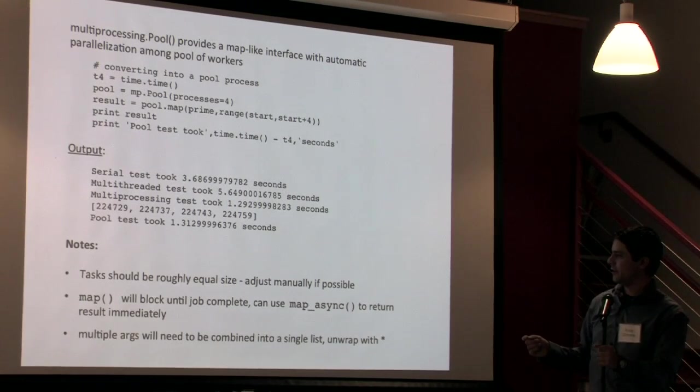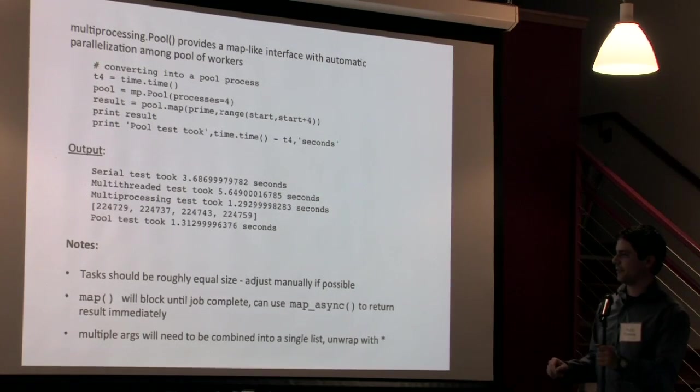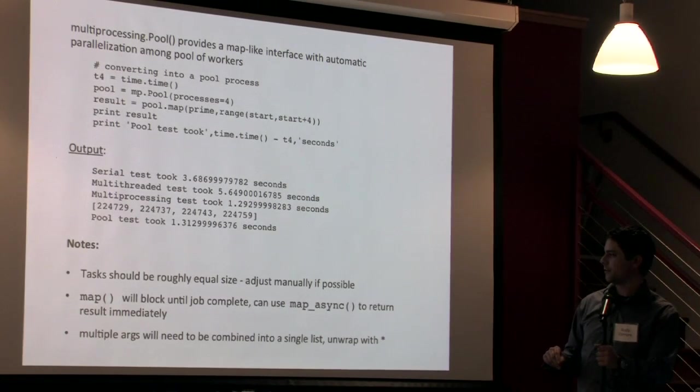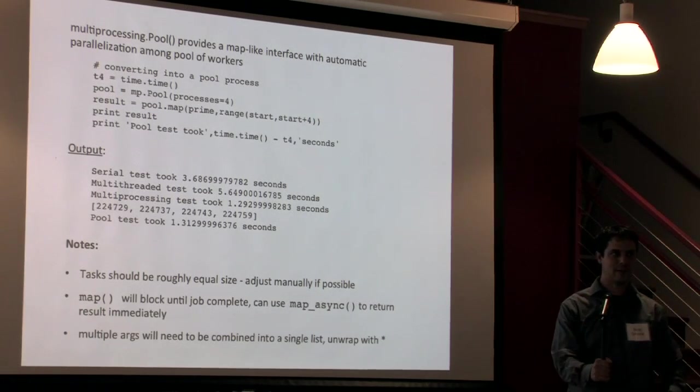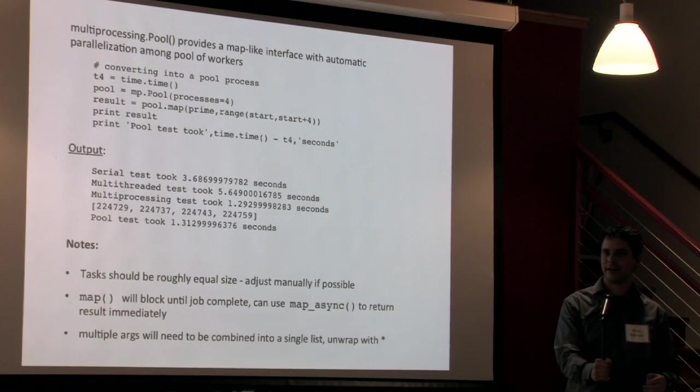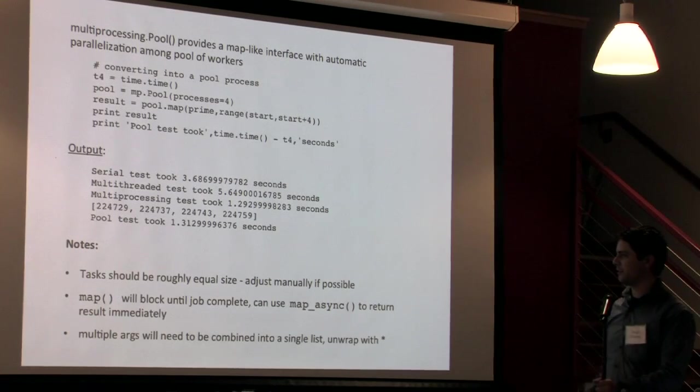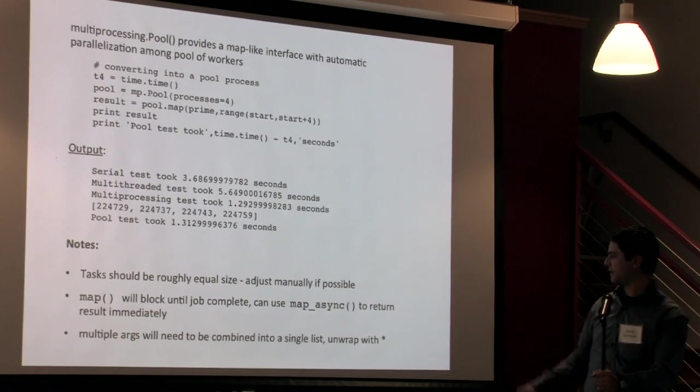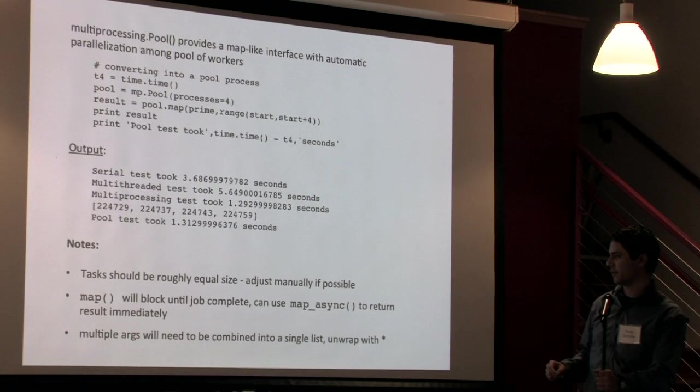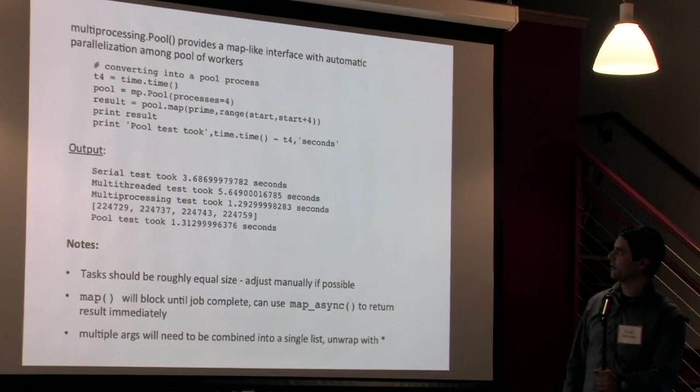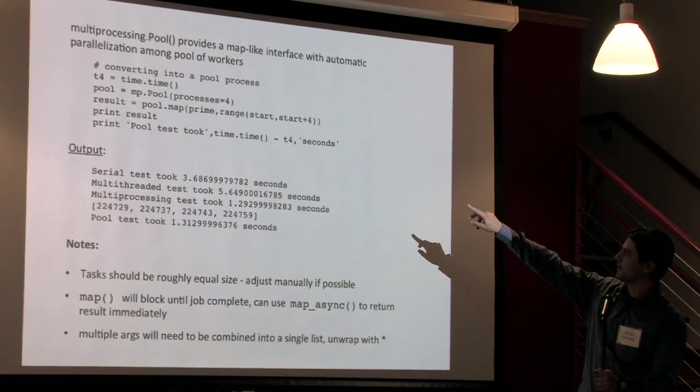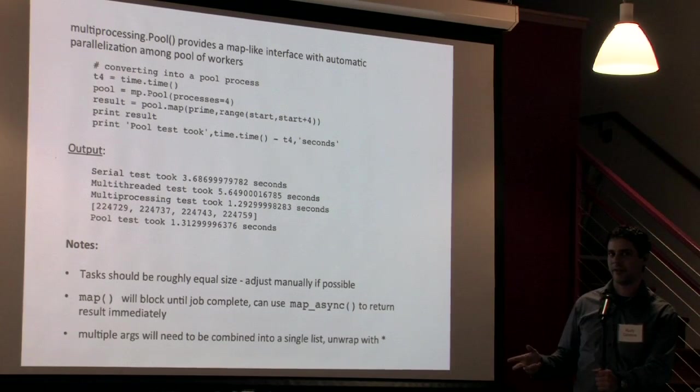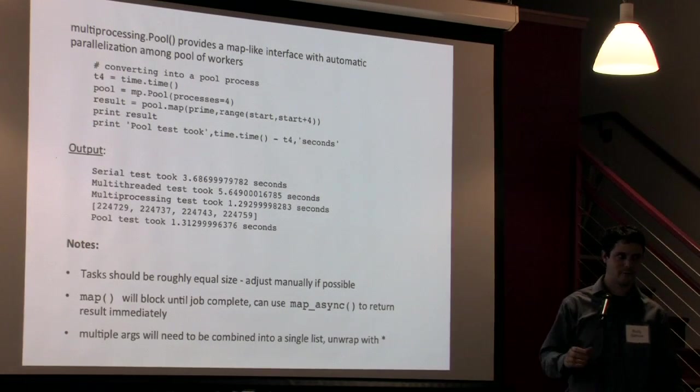Just a couple of notes on using this or caveats. So this pool map function is not particularly smart about dividing up your tasks. It's just going to sort of throw them out to the workers and that means that you'll get the best performance if your tasks are roughly equal size. So ahead of time it might be good for you to just do as much as you can to equalize the amount of time that these are going to take individually, adjust them manually if possible. This mapping function will block until the job is complete. That's probably usually okay but there's also a map asynchronous function that will return your results immediately without waiting for all the processes to complete if you find that useful. Finally you'll notice up here that I just handed it an array that I created with range function. That's because multiple args will need to be combined into a single list to use this map function. It won't accept multiple arguments so you'll just have to reconfigure your function to accept one list which isn't usually too difficult to do.